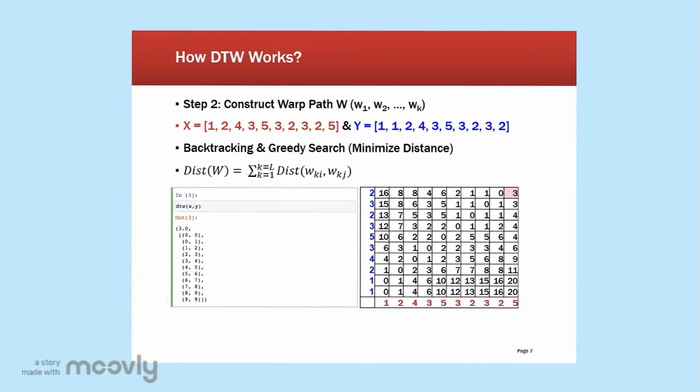So let's look at the matrix that we have just computed. We will start from the last element, which is at the end of each of the time series. In here it is represented by this 3. And then what would we do, we would compare the element which is on its left, on its diagonal, and on its bottom. Which of these is the smallest?